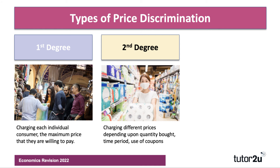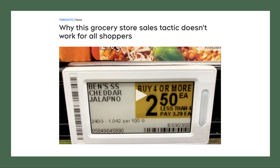Second degree price discrimination is where you're charging different prices again, but this time it might be linked to the quantity purchased, or it could be the time at which a purchase is made — peak versus off-peak — or you have to accumulate coupons or loyalty payments before you can engineer a meaningful price discount. Here's a good example from a grocery store: if you buy four or more, the price is £2.50, but if you buy less than four, you pay £3.29 each. A lot of supermarkets offer price discounts if you're willing and able to buy in bulk, so if you go to a wholesaler you'll get a much better price than at a retailer for essentially the same product.